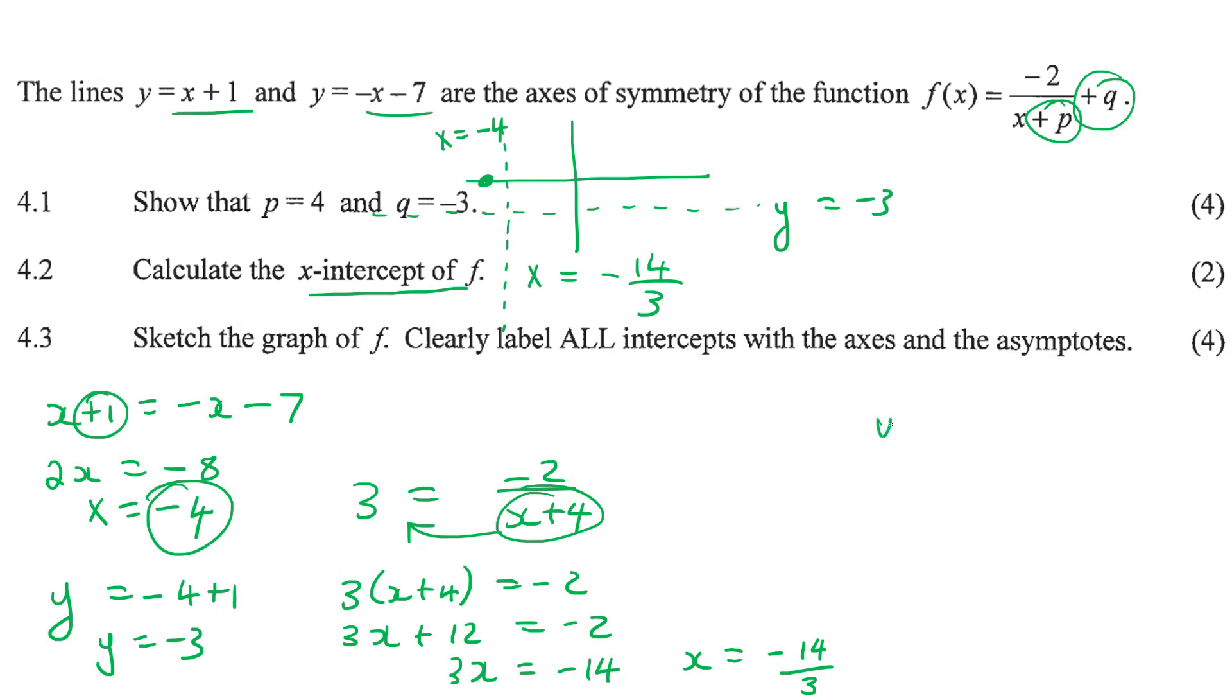So to find a y-intercept, you make x zero. So where's our equation? y equals to minus 2 over x plus 4 minus 3. Now to find a y-intercept, you make x zero. So zero. And so that's going to end up giving you negative 1 half, take away 3, which is then going to be negative 3.5.